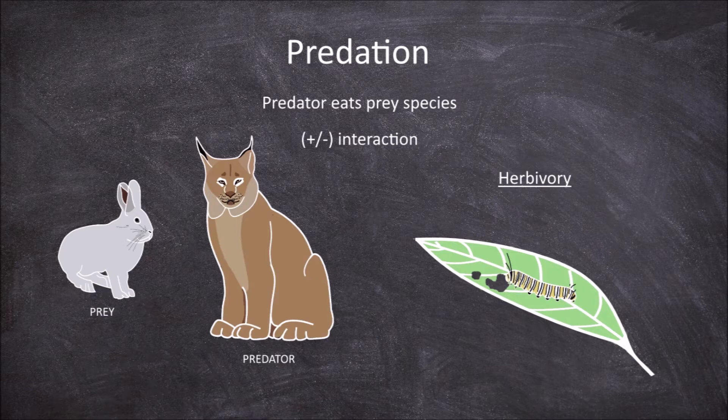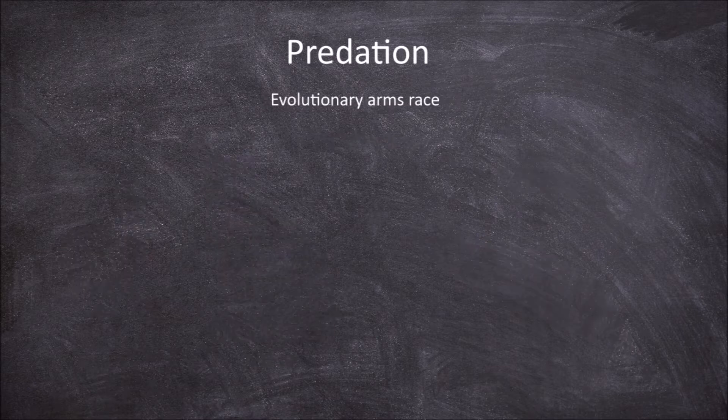Interactions between predator and prey have impacts on natural selection. Prey evolve traits that reduce predation, and predators evolve traits to get around any defences of the prey. This is called a co-evolutionary or evolutionary arms race.